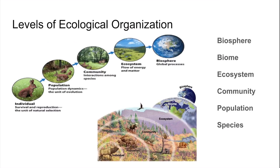Above that, we have the biome, which is a region with a characteristic plant community — for example, a desert or a tropical rainforest. And including all of the different biomes and ecosystems is the biosphere, which summarizes all the different global processes.